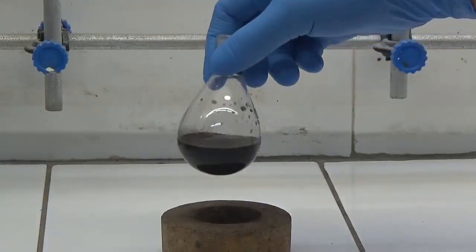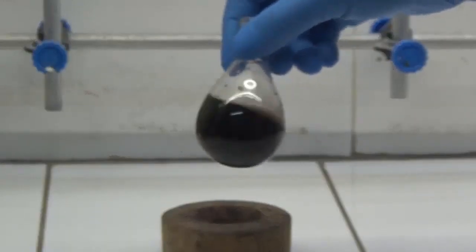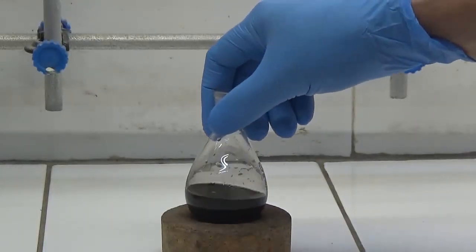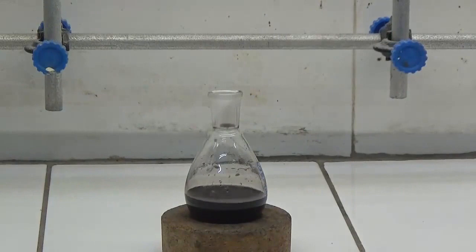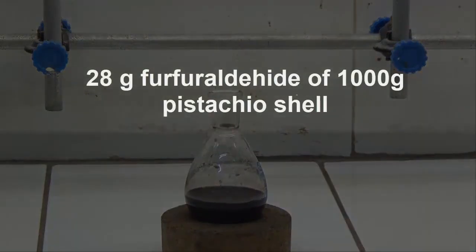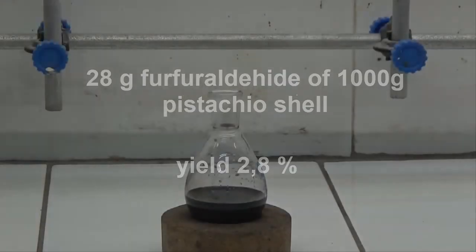It is observed that the distillate is colorless, but after a couple of hours it becomes dark. The yield of 1000 grams pistachio shell was 28 grams, 2.8%.